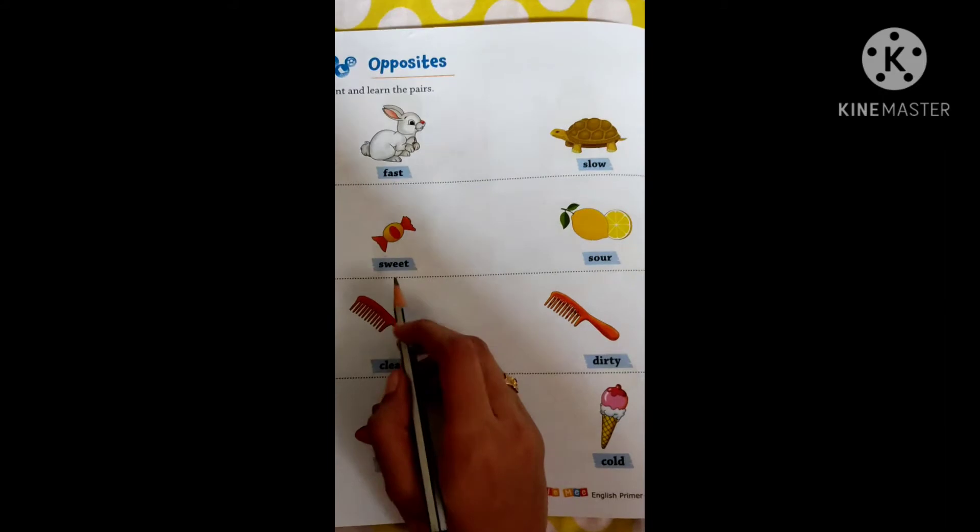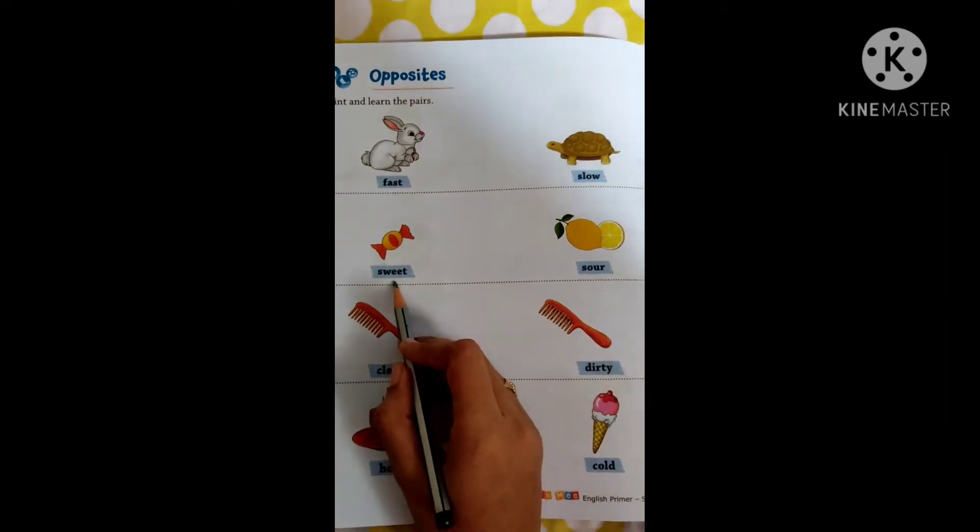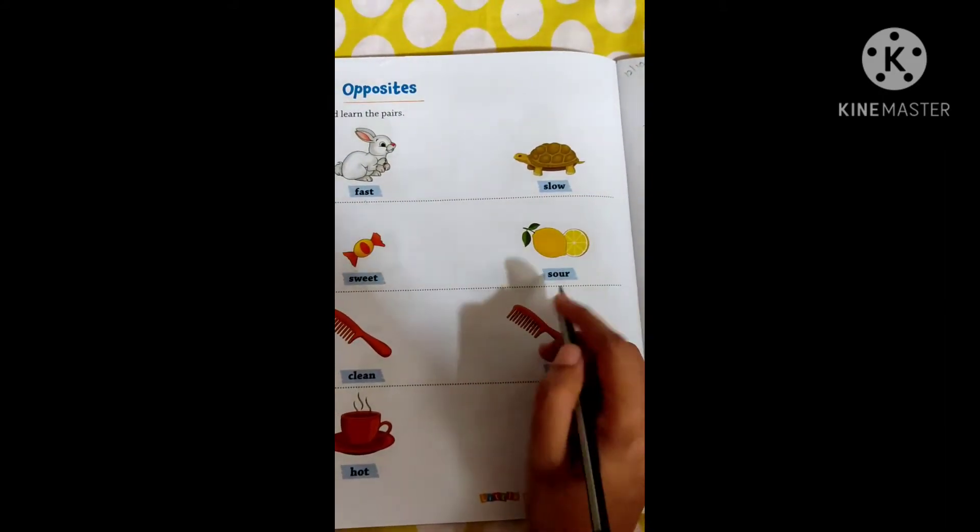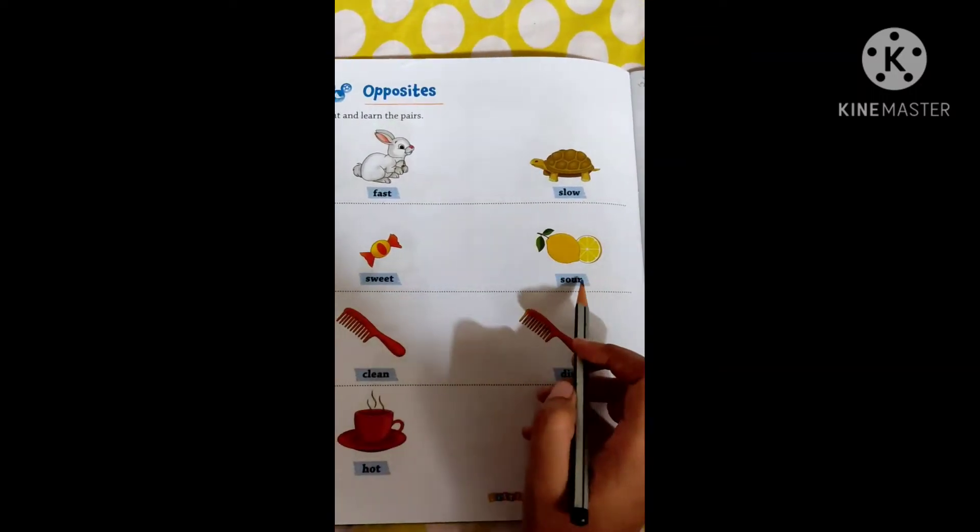Now this chocolate, how it gives you the taste? Sweet. And the lemon gives you sour. So sweet, sour.